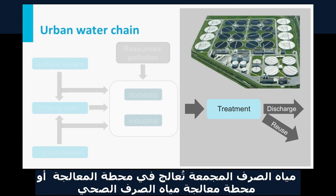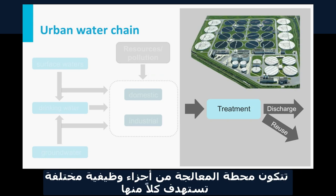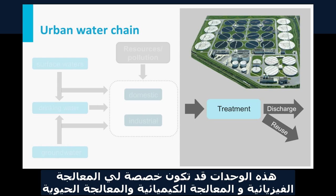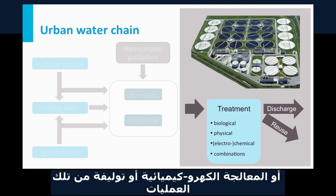The collected sewage is treated at a sewage treatment plant or wastewater treatment plant. The sewage treatment plant consists of several functional units, each targeting a specific group of pollutants. Such a unit may consist of physical treatment, chemical treatment, biological treatment, electrochemical treatment, or combinations of these types of treatments.